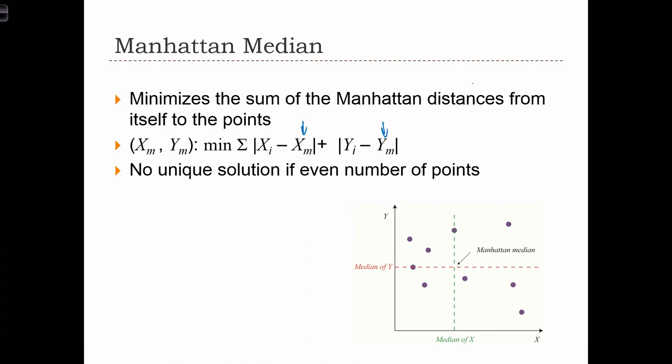Now there's a unique solution to this problem when the number of points in the data set is odd, because that unique solution exists exactly at the locations of the middle points in each case.